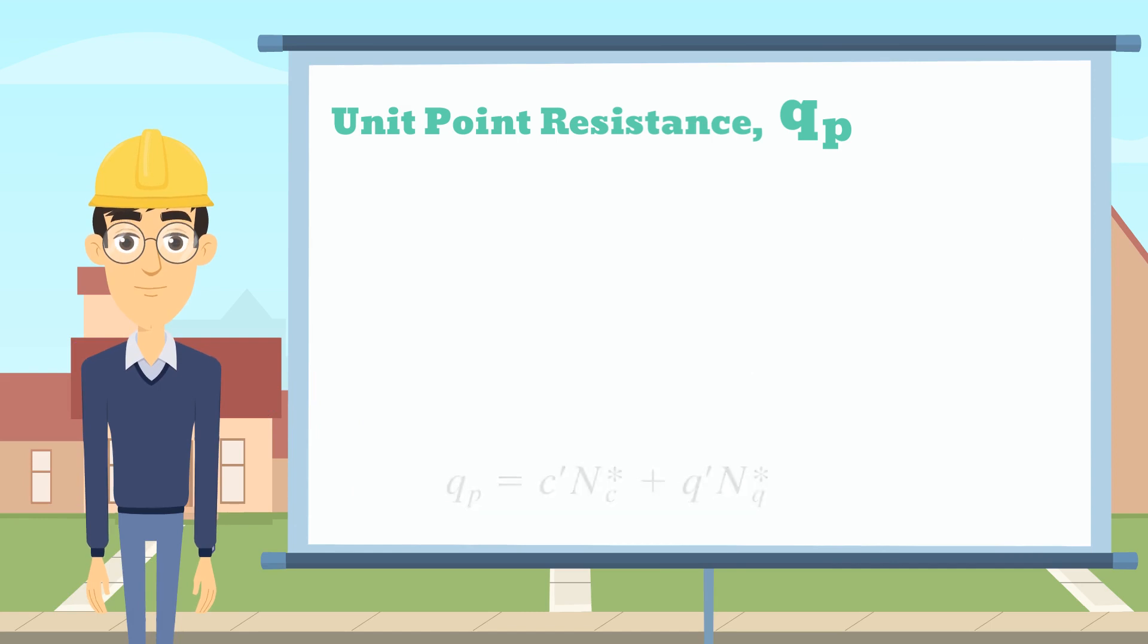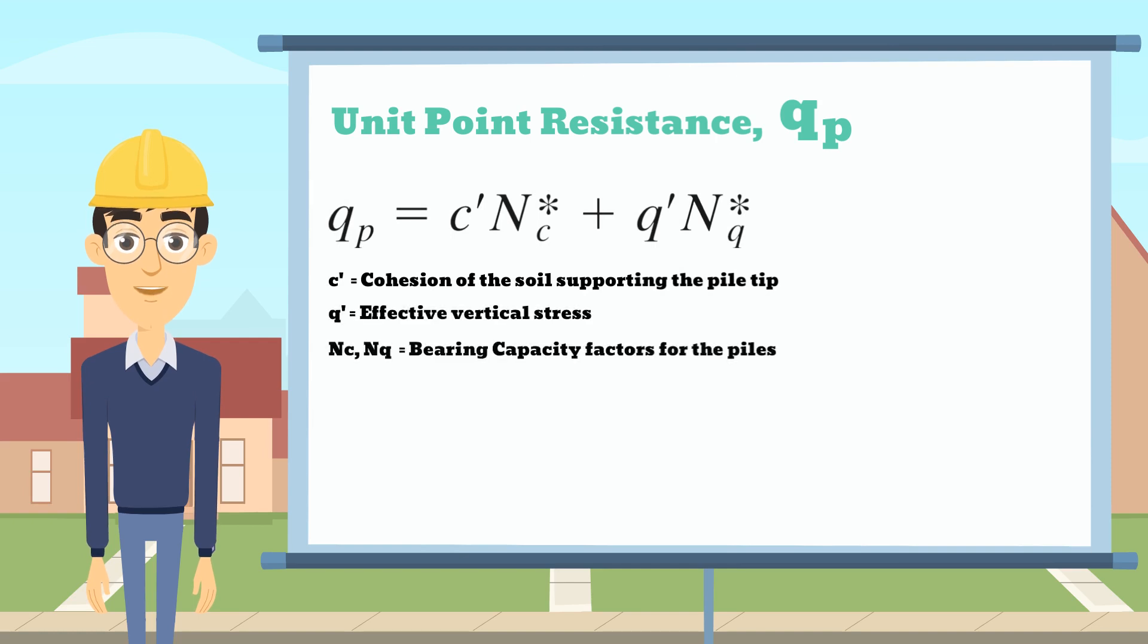In this formula, c′ is the cohesion of the soil, q′ is the effective vertical stress, and Nc and Nq are the bearing capacity factors for the piles.